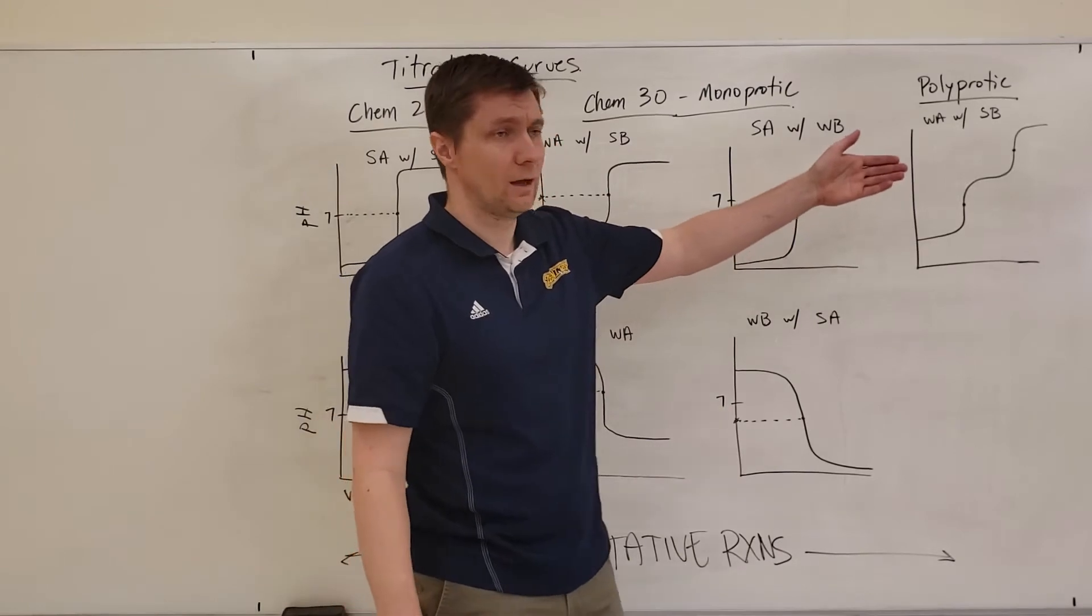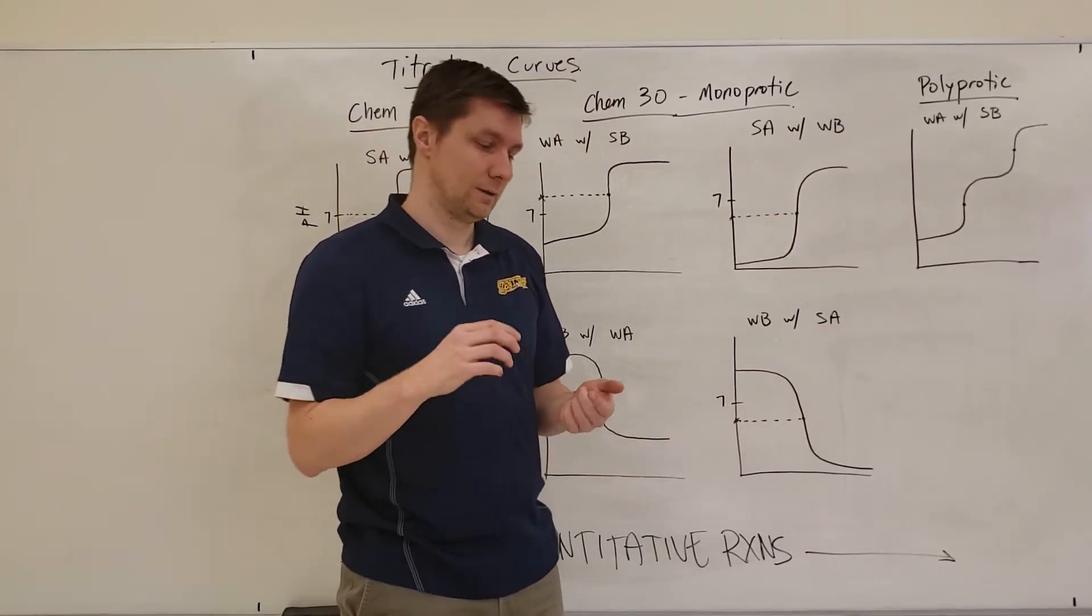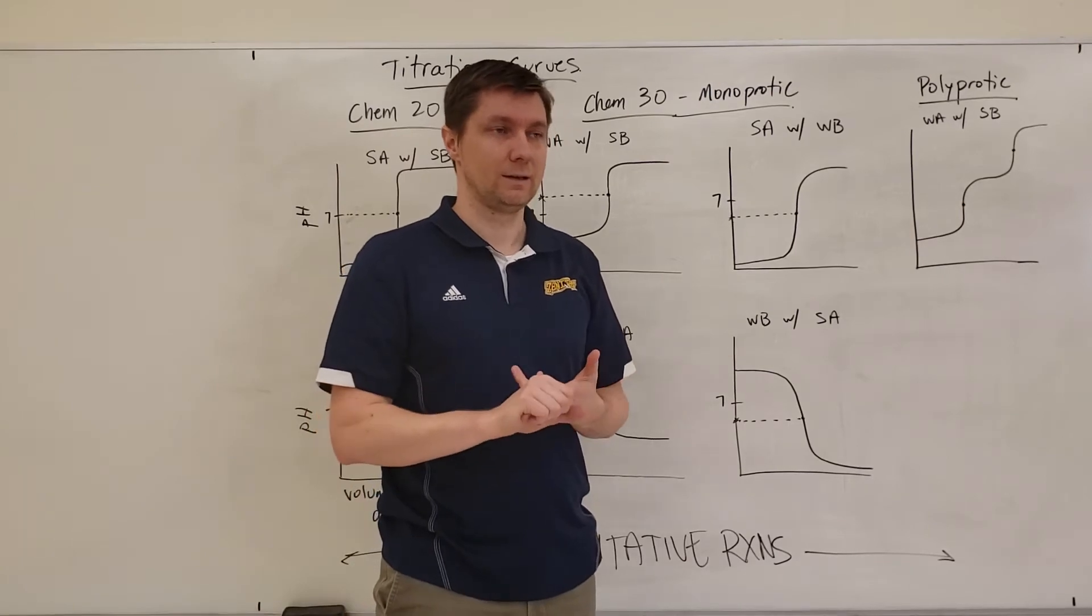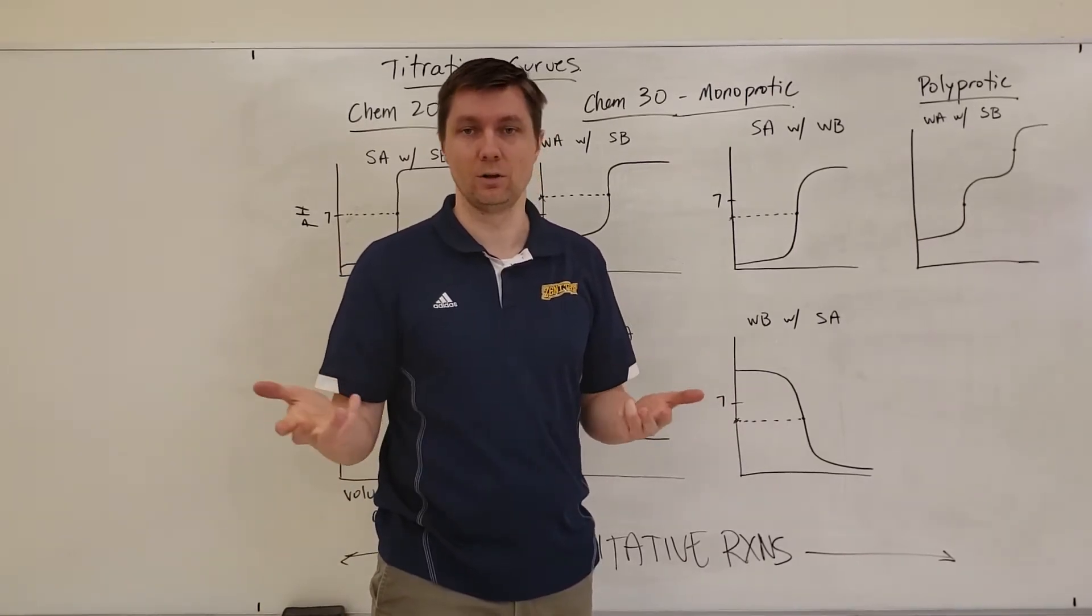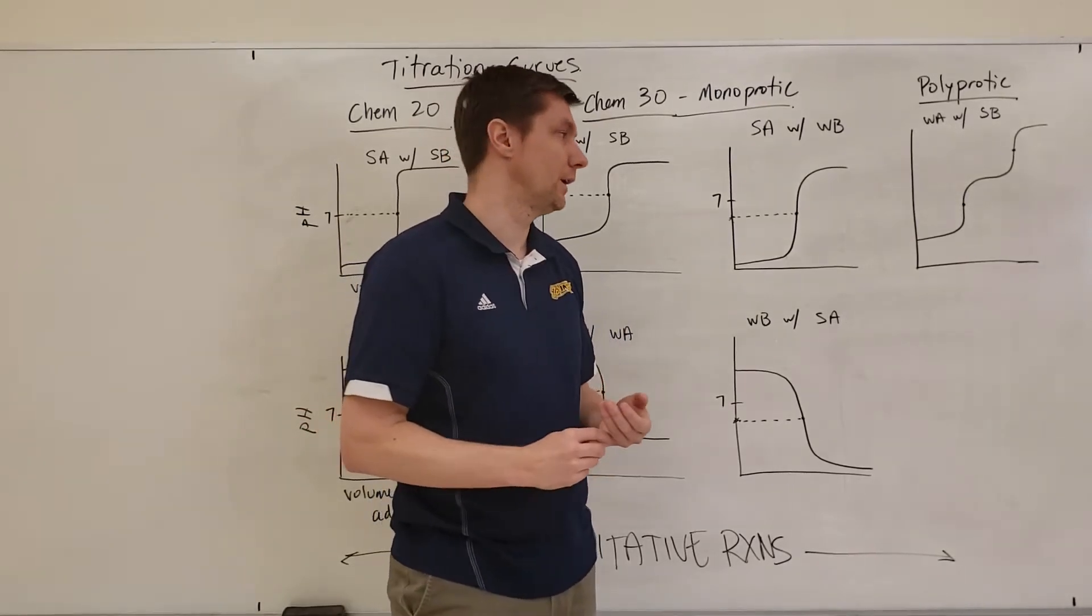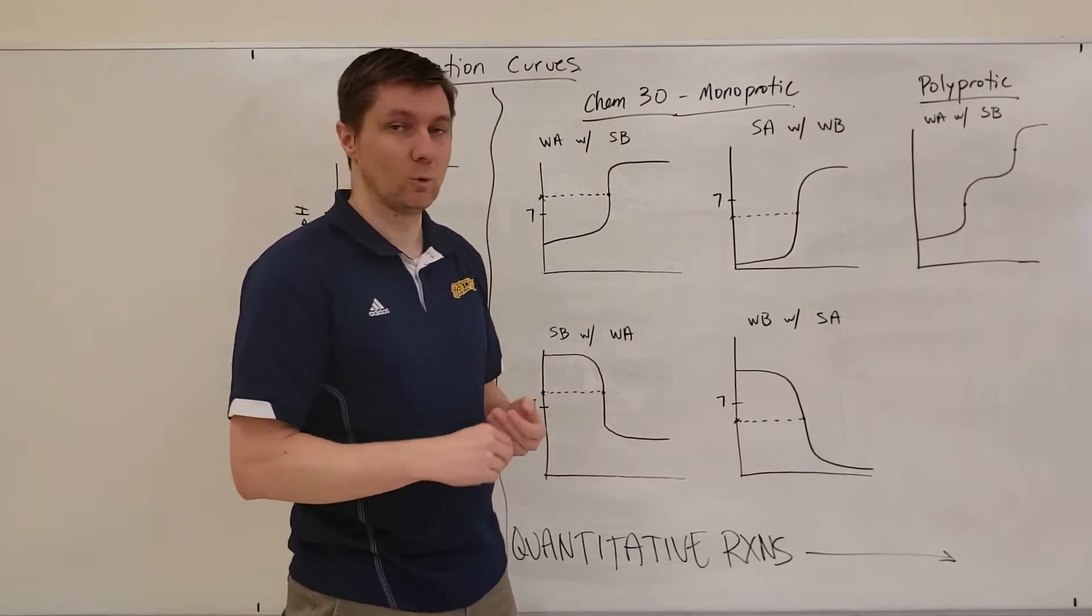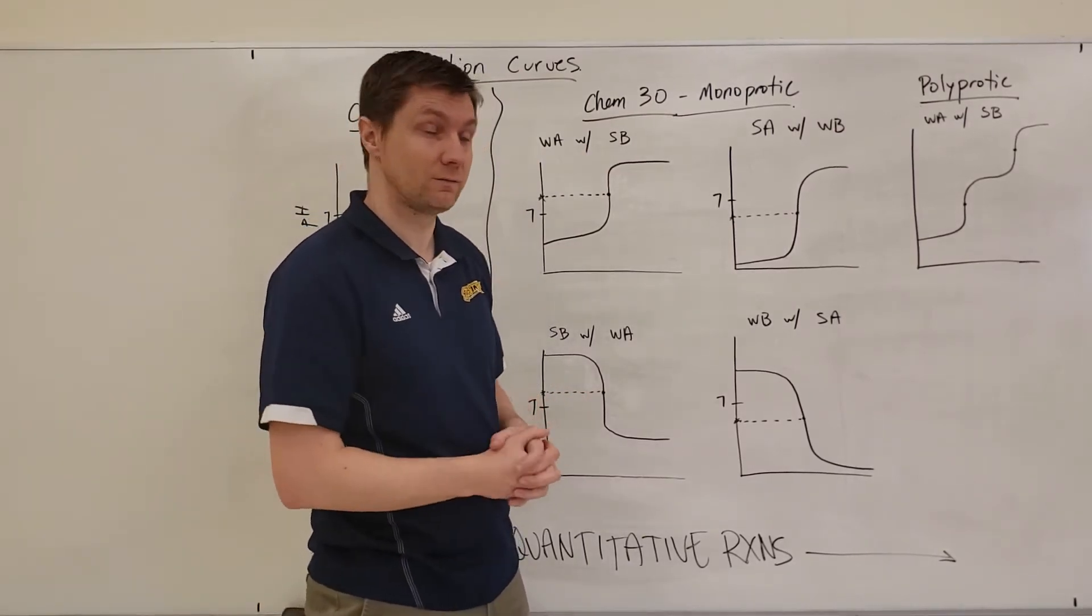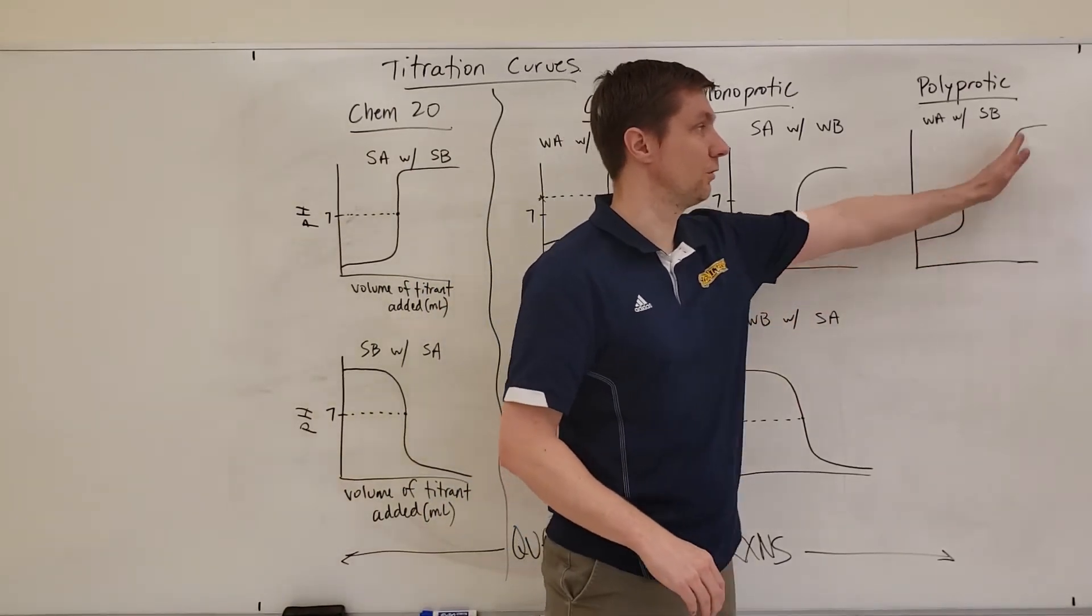Finally, we can do a titration with substances that are polyprotic. So something like the carbonate ion, CO3²⁻ is considered to be polyprotic because it can accept two protons onto it. And because of that, we're going to get two equivalence points from that.